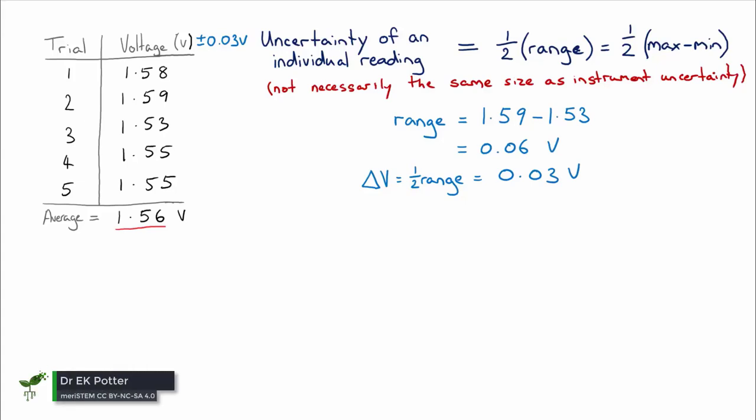Now we want to look at the uncertainty of the average value of all that data combined. As we said before, if you take lots of readings, you are going to know that average value better and better the more readings you take. So the calculation for the uncertainty of the average value is going to reflect that the more readings you take, the better you know that value, or the smaller the uncertainty will be.